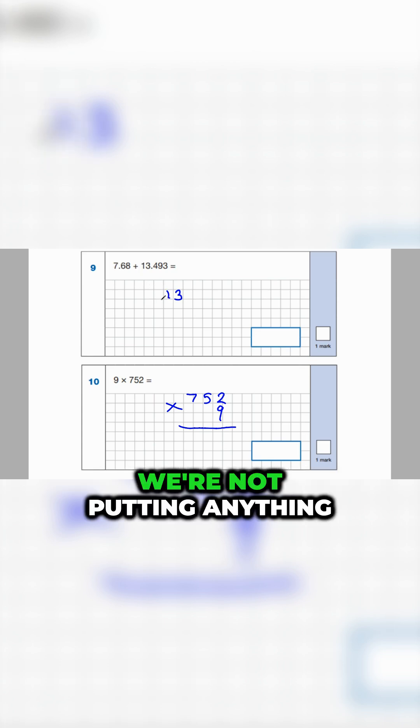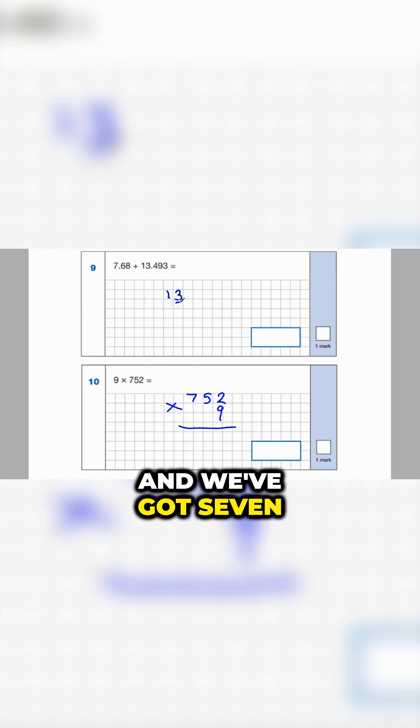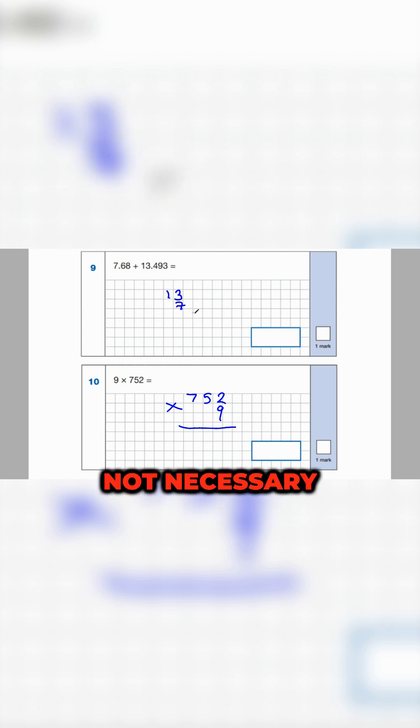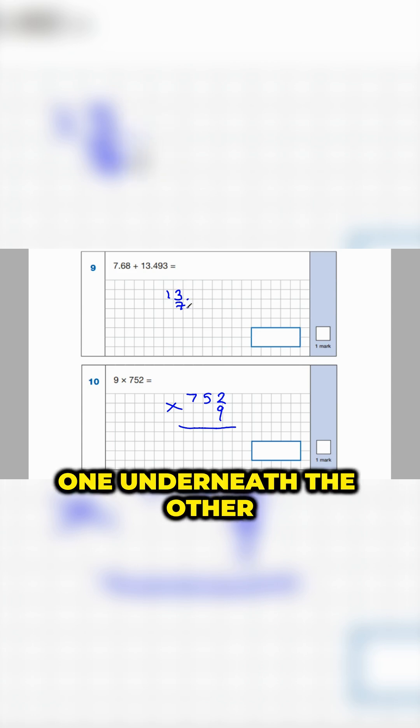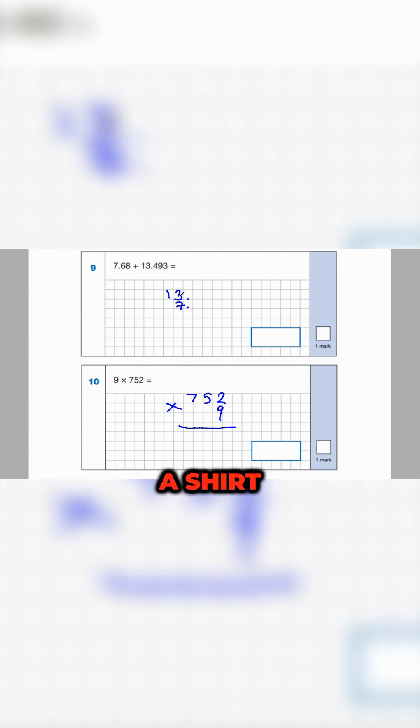We've got no tens, we're not putting anything in here, and we've got seven ones. We may even want to put a zero here but it's not necessary. The next thing is to put in the decimal points, and as I like to say, decimal points one underneath the other like buttons on a shirt. That's a nice way of remembering it.